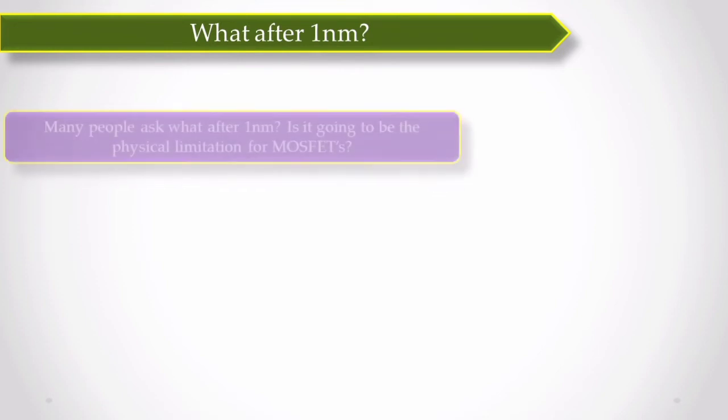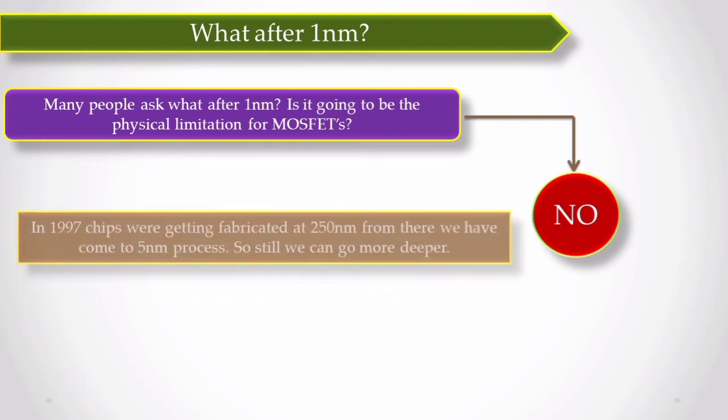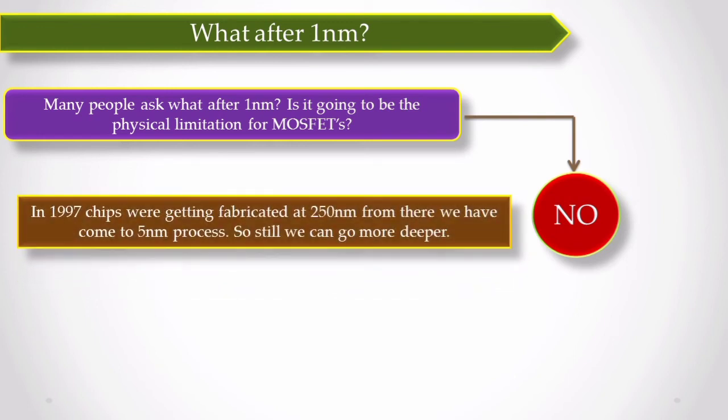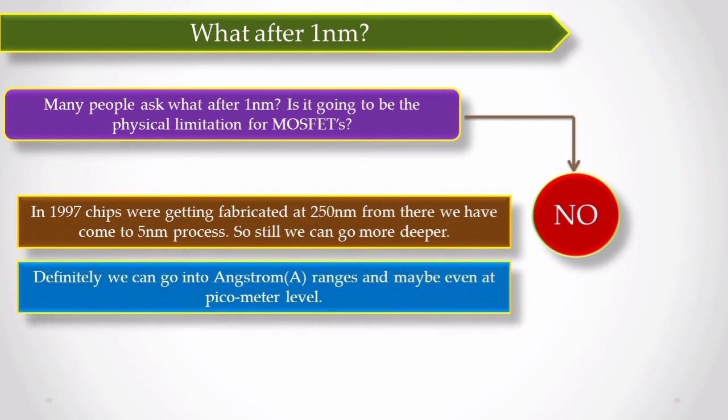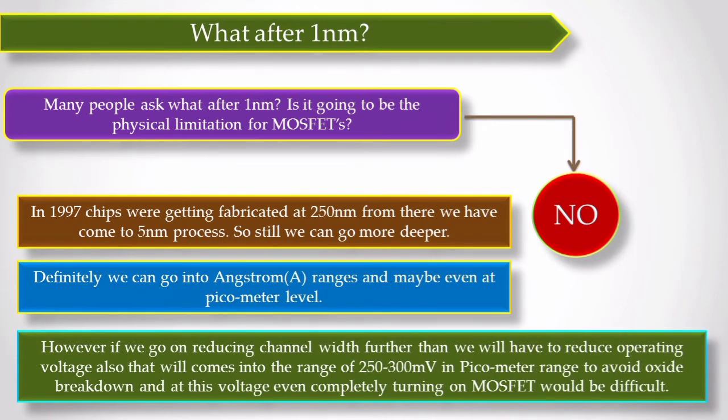So the question which people generally ask, like we are at 5 nanometer, then 3 nanometer, then 1 nanometer. What after that? Like are we going to reach the physical limitation of chips? So the answer of that question is very simple. No, we are not going to reach the physical limitation of chips. The first straightforward answer is like before nanometer, we had micrometer. So after nanometer, the chips could go into picometer range as well.